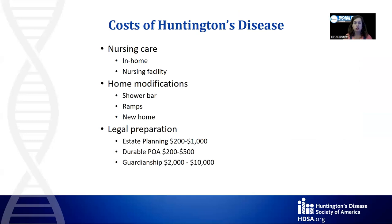Other costs as the disease progresses include nursing care, whether in-home or at a nursing facility, and home modifications like a shower bar, ramps, or having to buy a new home entirely. Regarding the cost of legal preparation: while you do have to pay money, it is significantly cheaper to prepare in advance than to pursue emergency guardianship. Estate planning can cost anywhere from $200 to $1,000. Getting a durable power of attorney can cost anywhere from $200 to $500, but that is significantly cheaper than pursuing guardianship for a family member, which can cost up to $10,000 and requires going to court.